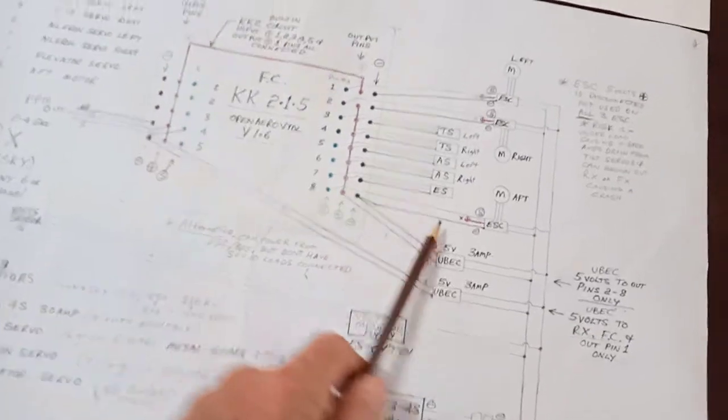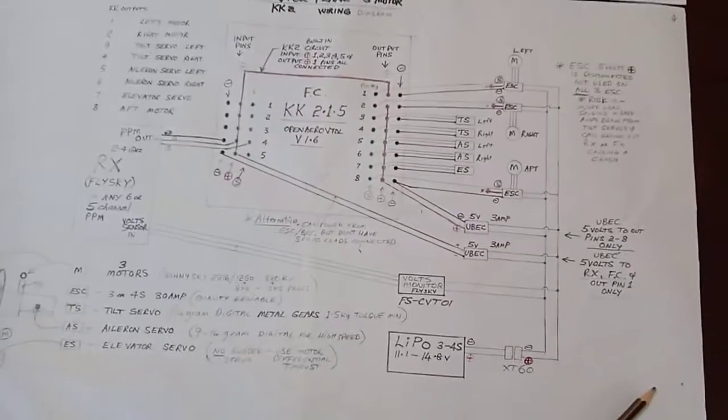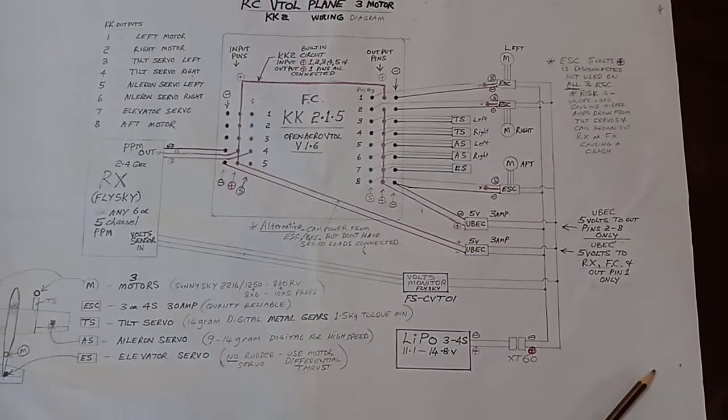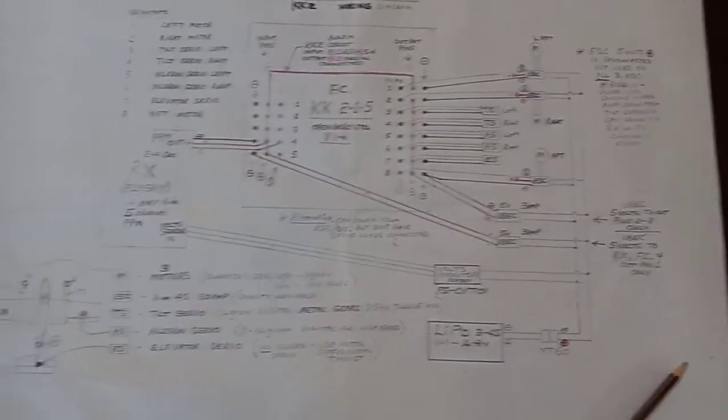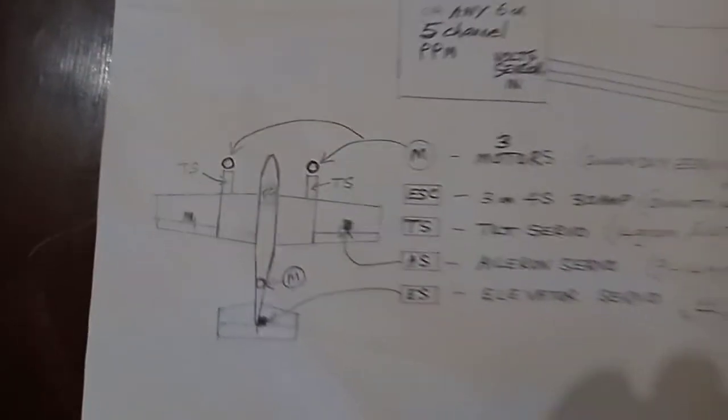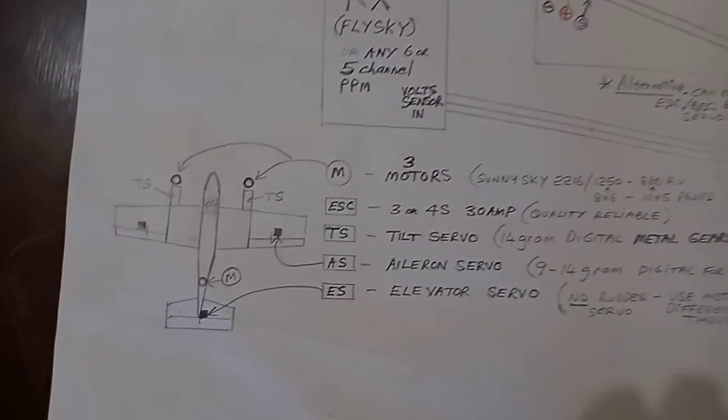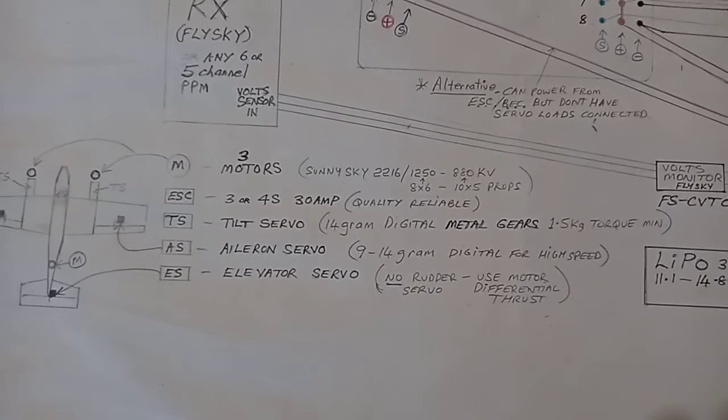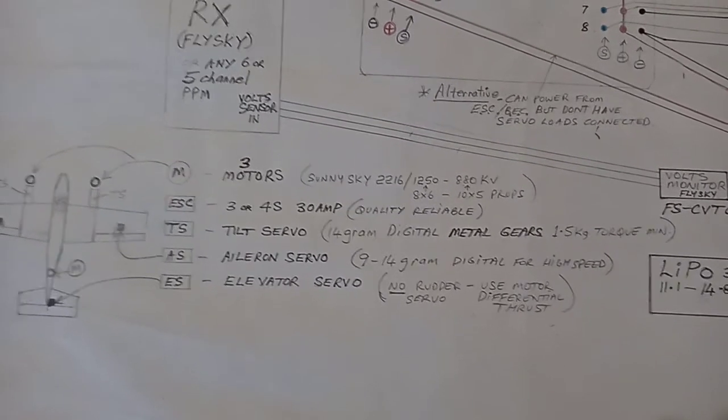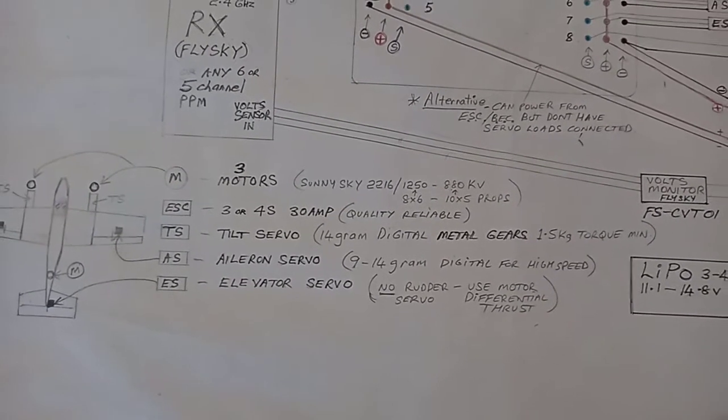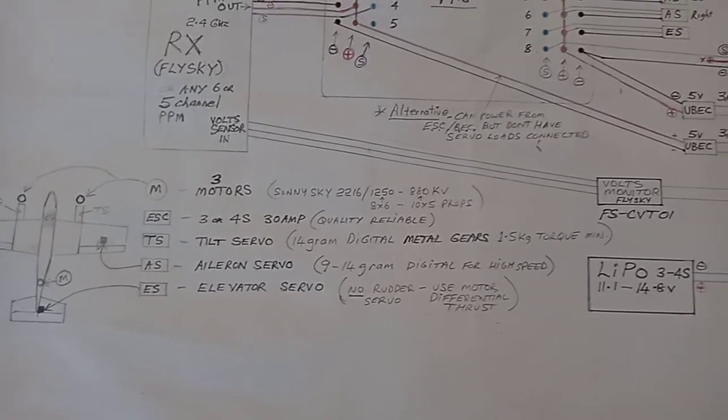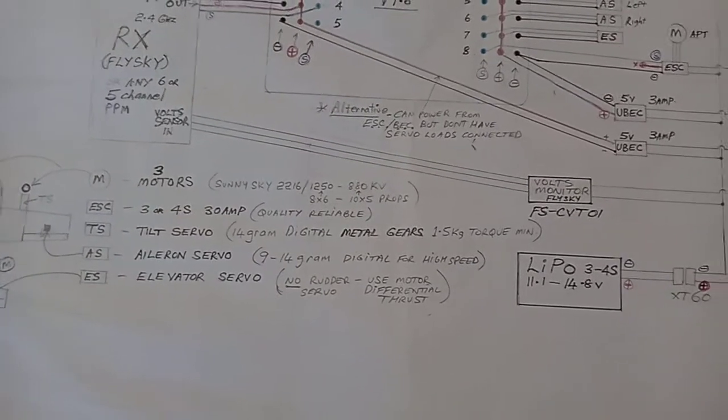So that's your outputs from one to eight, and that's how it's all wired. If I can focus, you could snapshot that. Might help you. There's the layout. There's some information on what I use, what motors and speed controller.